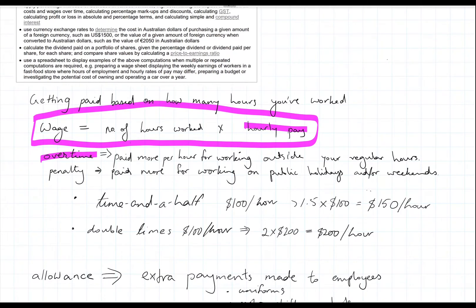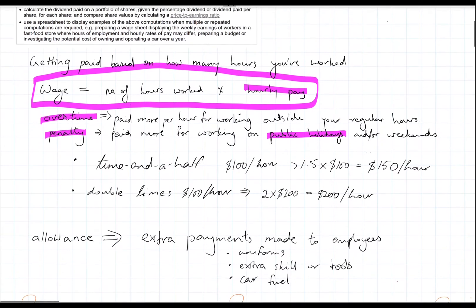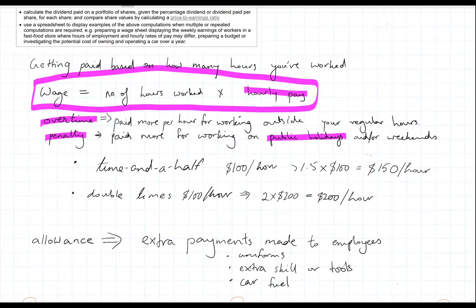Overtime is when you're working outside of your regular hours. And sometimes you can also get a penalty pay, which is you're getting paid more because you're working on a public holiday or on a weekend. So generally your overtime can be time and a half, which means if your regular pay was $100, then you would get paid 1.5 times that. So your overtime pay would be $150 an hour.